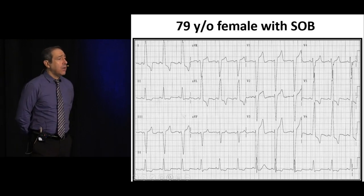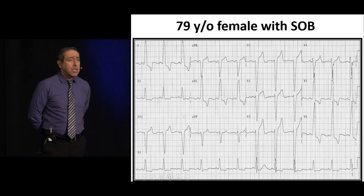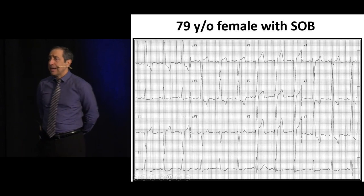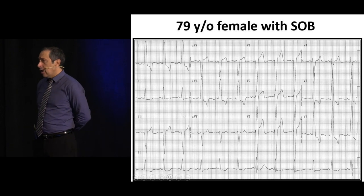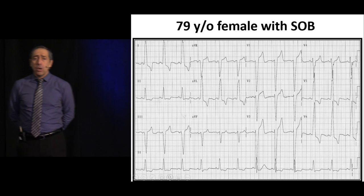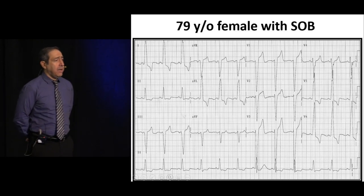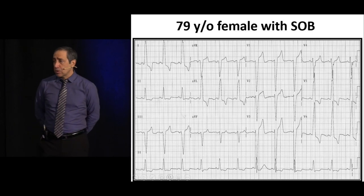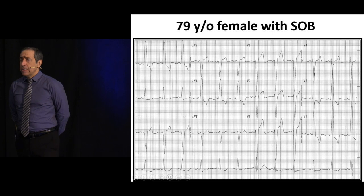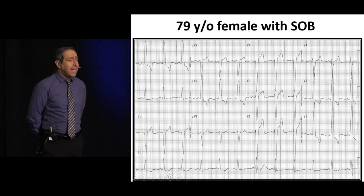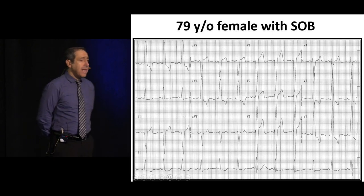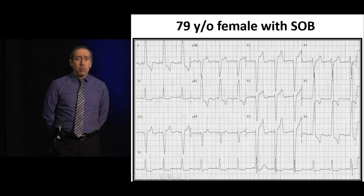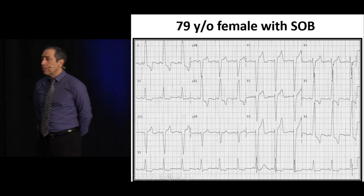When you have myocardial infarction in the setting of a left bundle branch block, it is hard to recognize because these patients already have ST segment elevation. How do you know when somebody is having a heart attack with a left bundle branch block? There are rules called the Sgarbossa criteria. But rather than memorizing all those rules, the better approach is to understand what a normal left bundle branch block looks like.